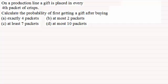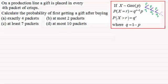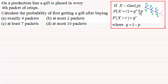As a quick reminder about geometric distributions: in an earlier tutorial I showed that this was essentially the tree diagram we get. If X is distributed geometrically with probability of success p, then P(X = r) = q^(r-1) × p, and P(X > r) = q^r, where q = 1 − p.